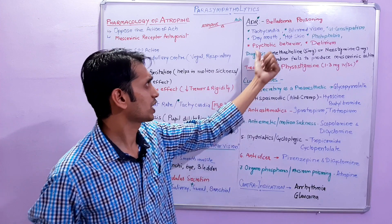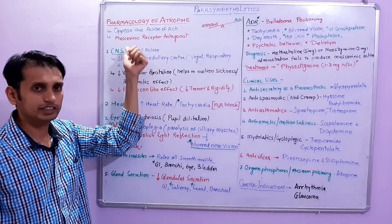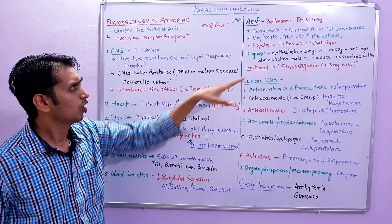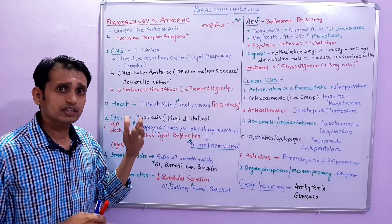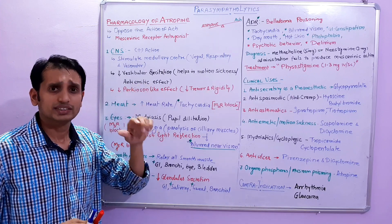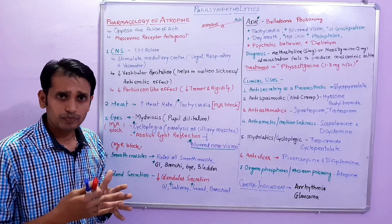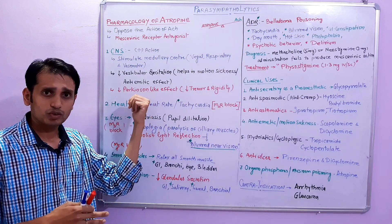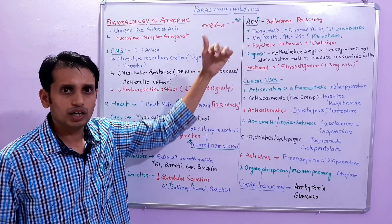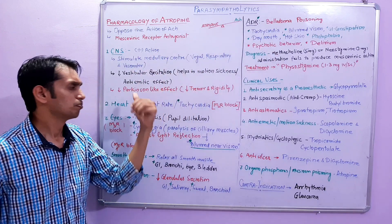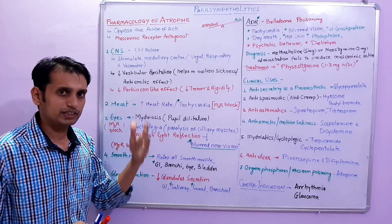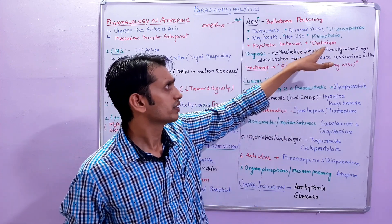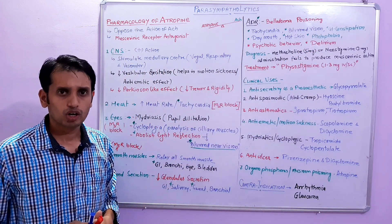Additional side effects include photophobia, due to abolished light reflex. Also psychotic behavior and delirium can occur. The Parkinson's effect and psychotic effect are opposite — when treating Parkinson's with anticholinergic drugs, dopamine levels can change, and psychosis may increase. This is the main phenomenon, and it also produces delirium. These are the key features of belladonna or atropine poisoning.